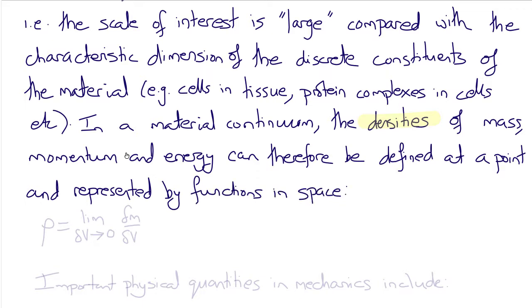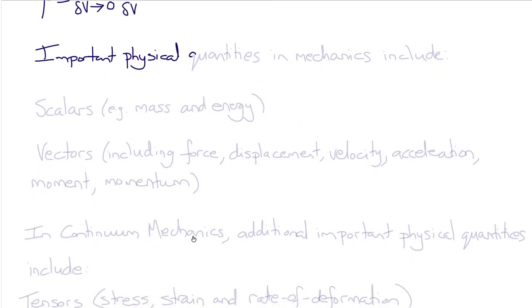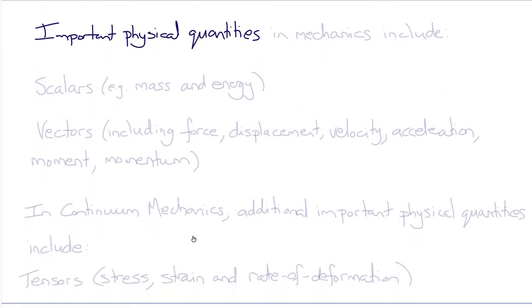In a material continuum, we can define the densities of mass, momentum, energy, or other physical quantities at any point in space and represent those densities as continuous functions. For example, mass is not a property of a point, but density rho is the limit as the volume delta V tends to zero of delta M over delta V, where delta M is the mass contained within delta V. So although a point doesn't have mass, it can have mass density described by a continuous function.